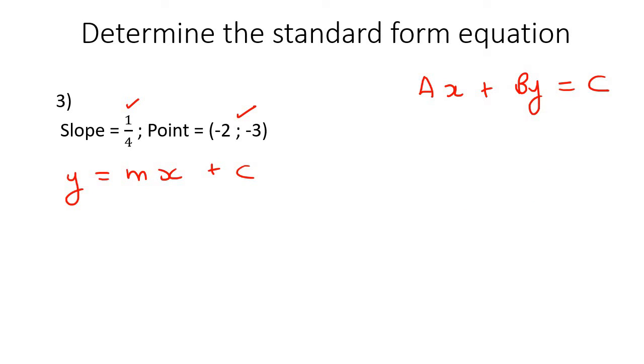So the slope is a quarter, so we're going to fill that in as a quarter. Then the minus 2, we're going to put that in the place of x. And the minus 3, we're going to put that in the place of y. So we're going to say minus 3 equals to a quarter. x is minus 2.